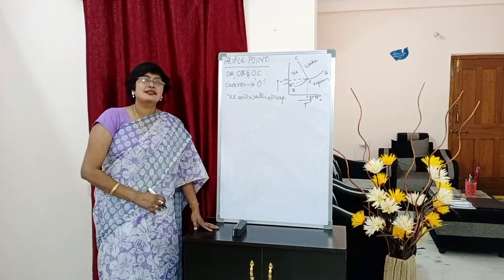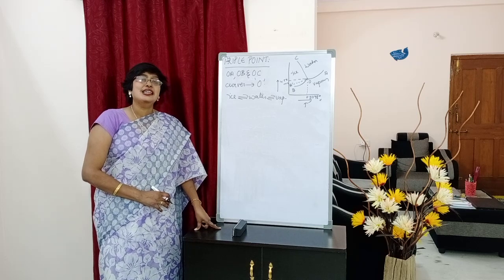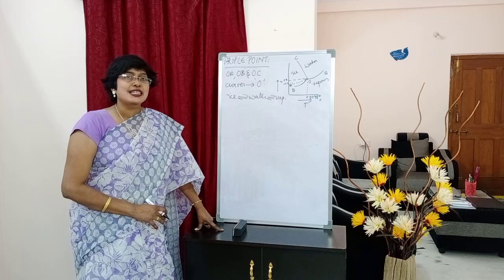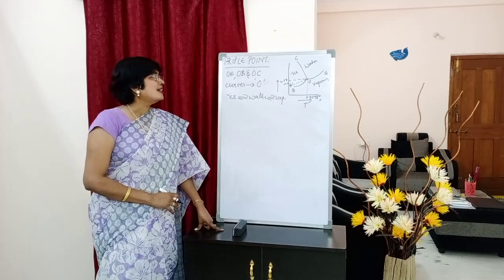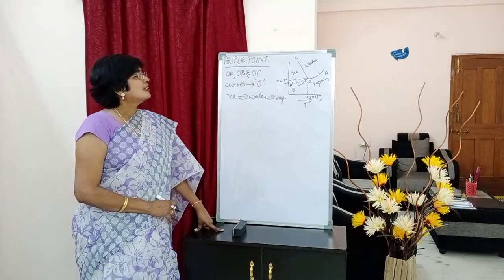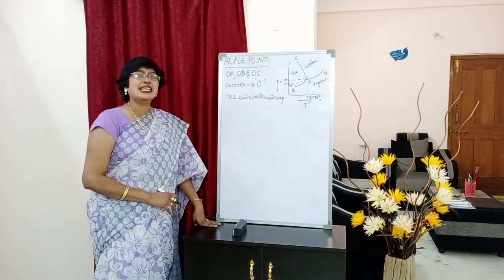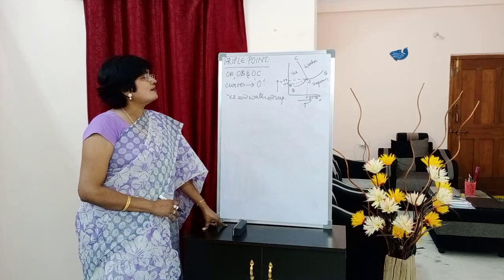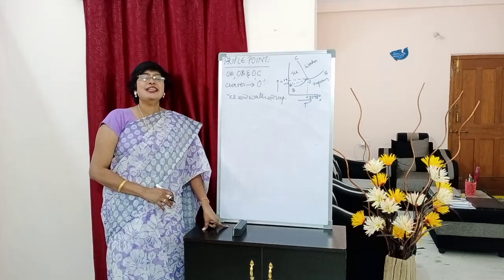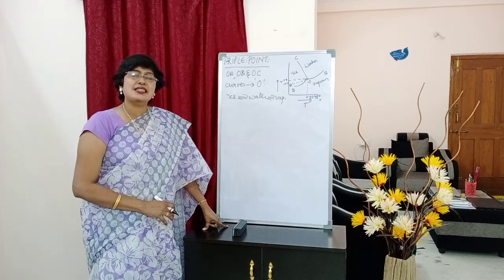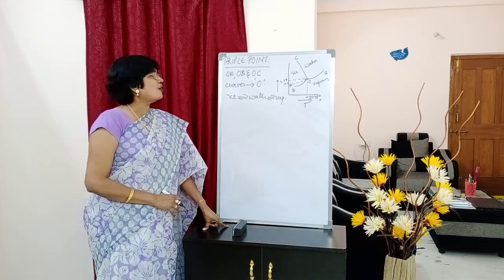A very important point: there will definitely be a question about the triple point of the water system. Put the side heading: Triple point. The triple point in this phase diagram is denoted by the letter O. Here all the curves — OA, OB, and OC — are intersecting, meeting at point O, which is called the triple point.